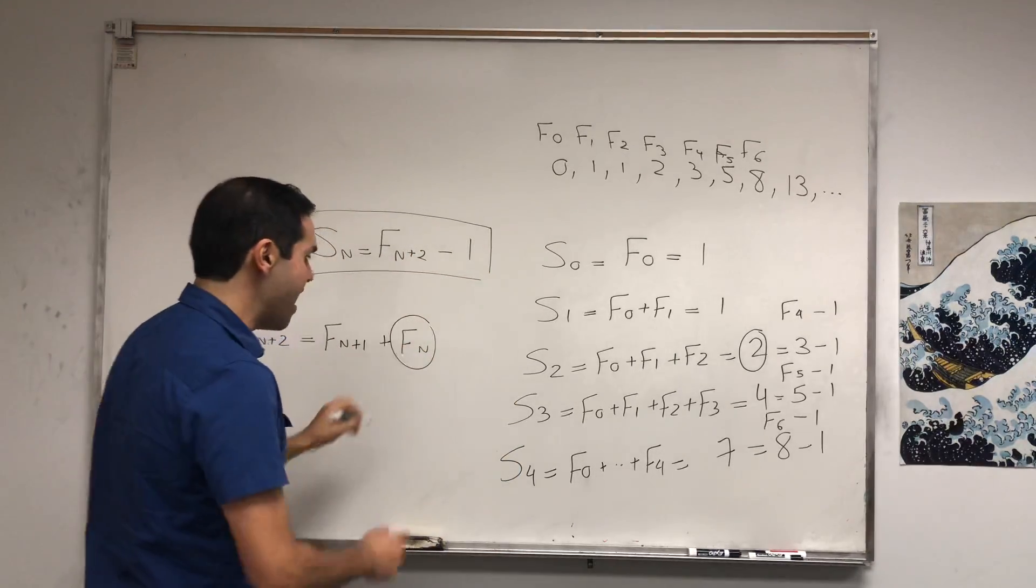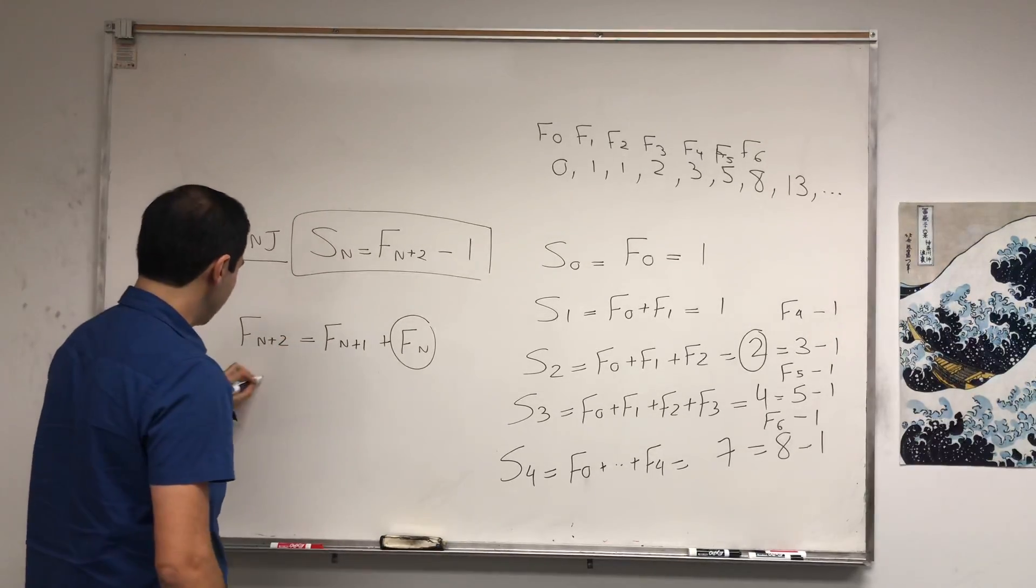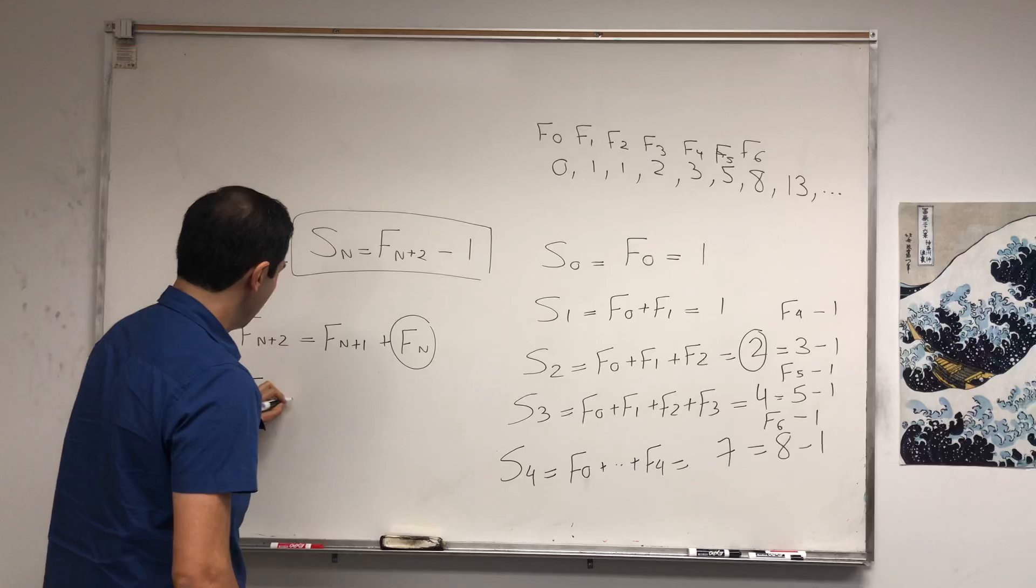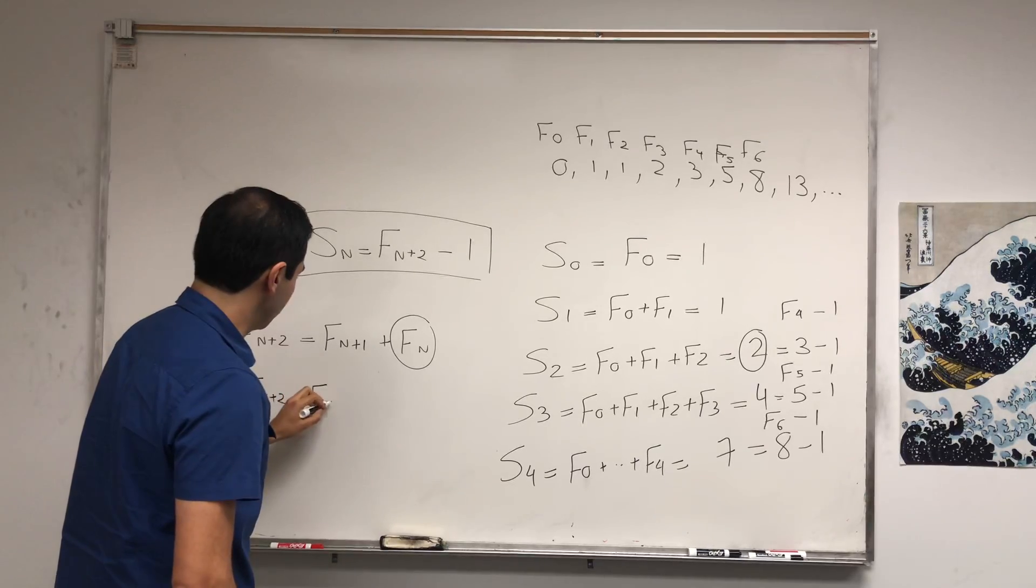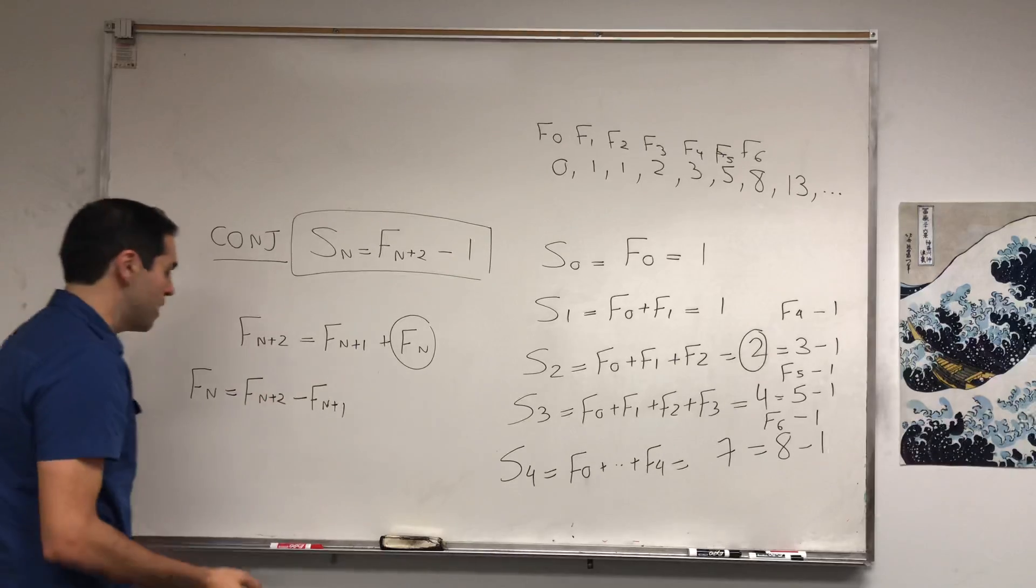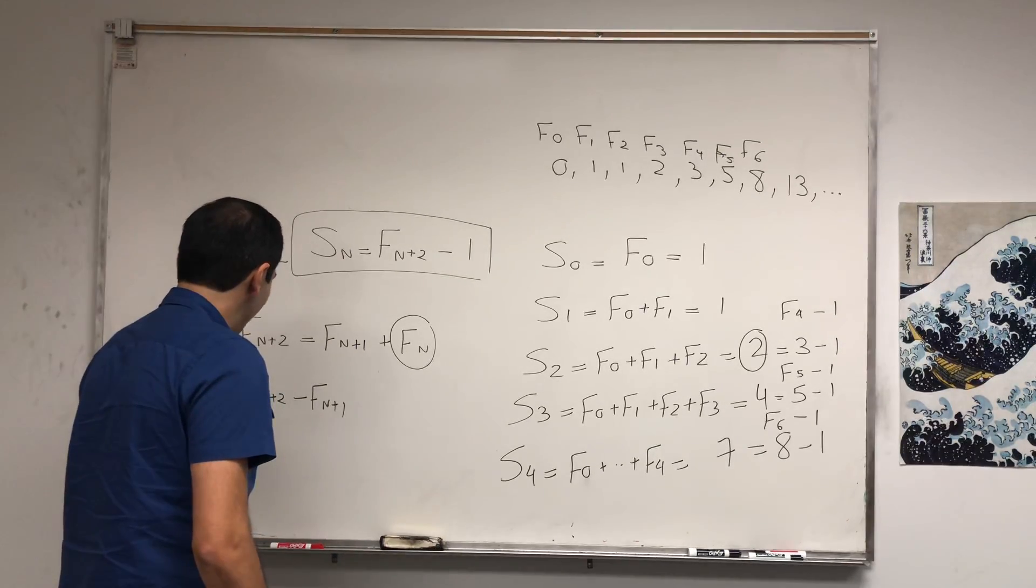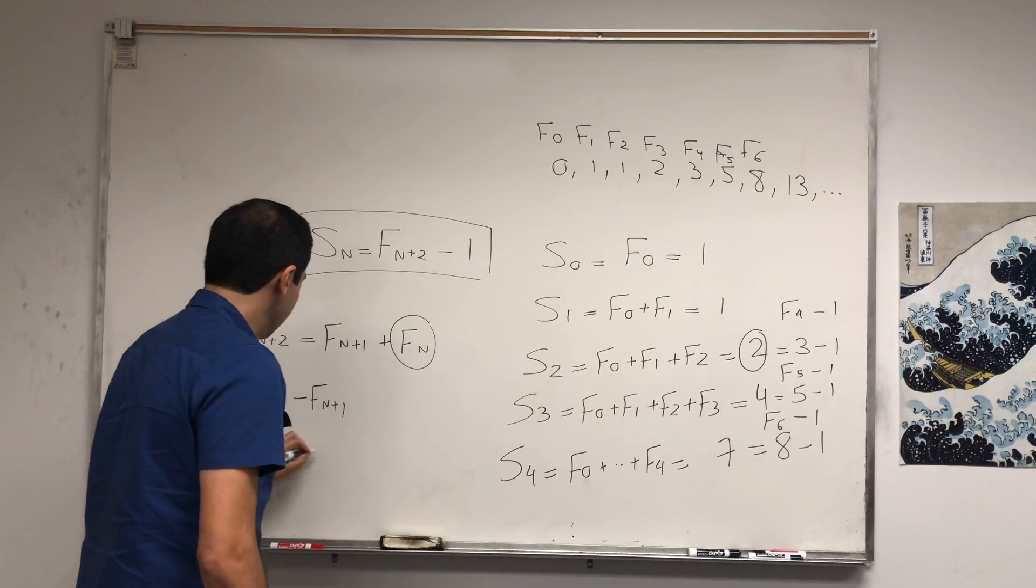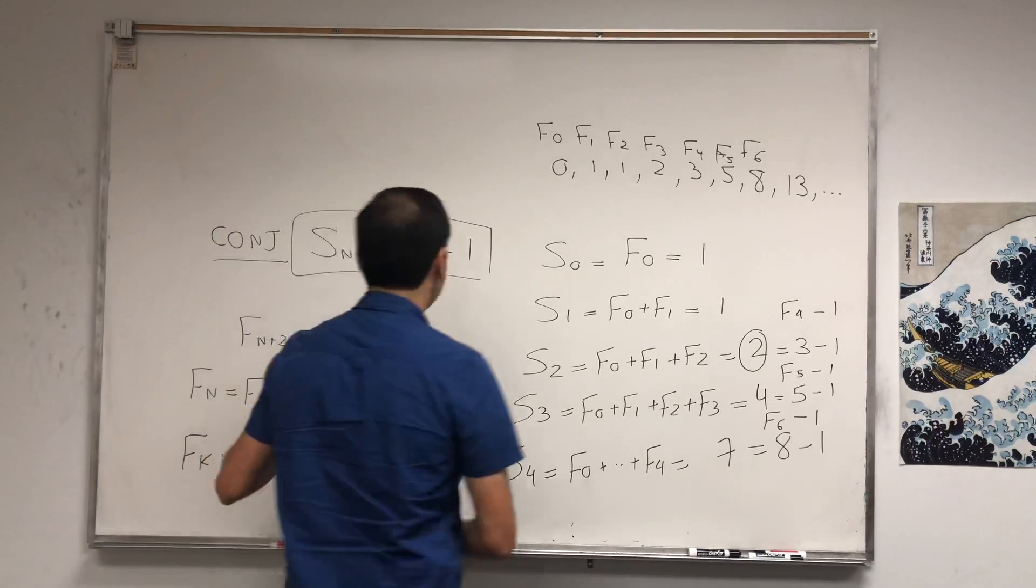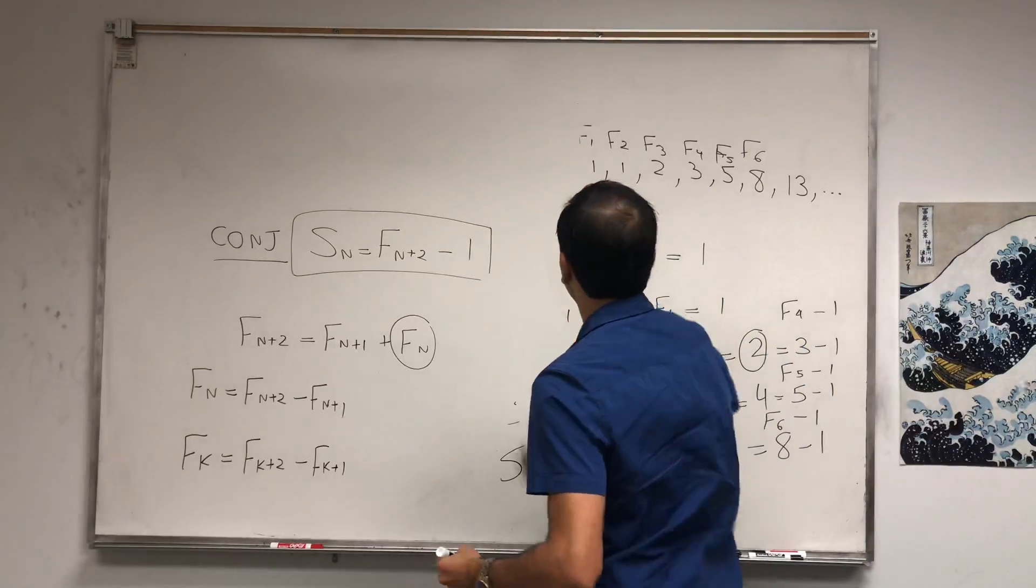Fn can be written as a difference: Fn equals Fn+2 minus Fn+1. This is how you get this Fn+2, by the way. So in particular, Fk equals Fk+2 minus Fk+1. Let's plug this into the definition of Sn.